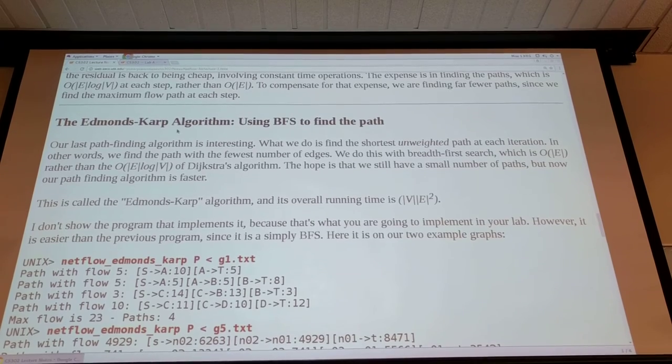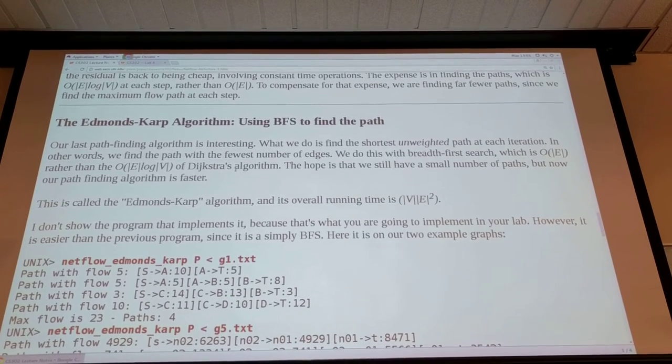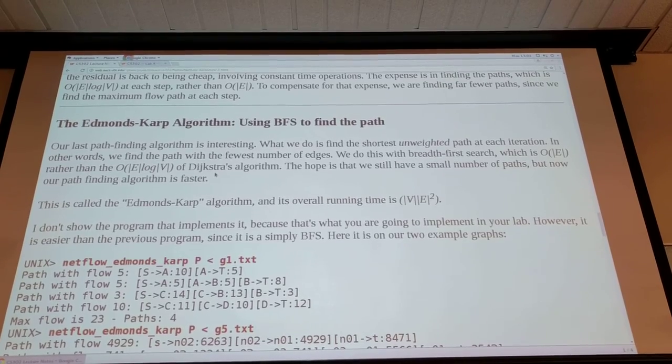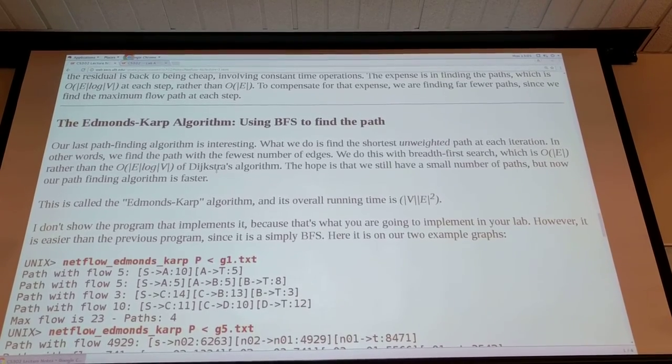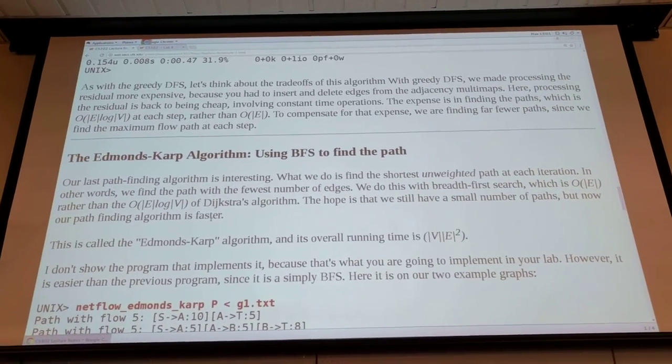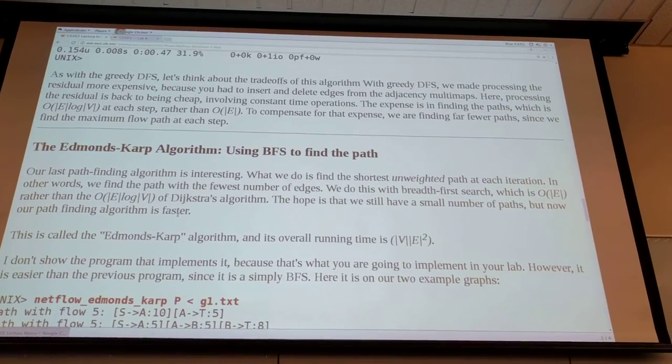So here's his Edmund's Karp notes. And basically, it's using breadth-first search to find the augmenting path. So basically, the way this differs from the other ones that he talks about from Network Flow is the method used to find the next augmenting path.